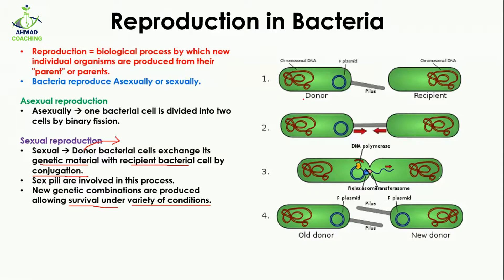Here we have one donor bacterial cell and one recipient bacterial cell. The recipient cell is empty while the donor has a plasmid or genetic material. The pilus or sex pili attaches to the recipient cell. The plasmid, which is a double-stranded structure, separates and one strand moves from the donor bacteria to the recipient bacteria. Then the sex pili separate from each other.